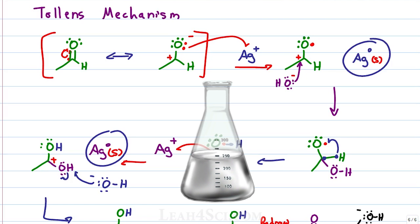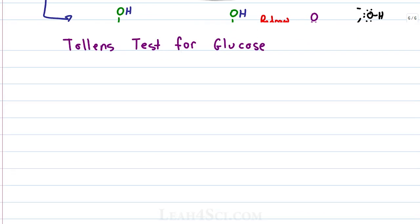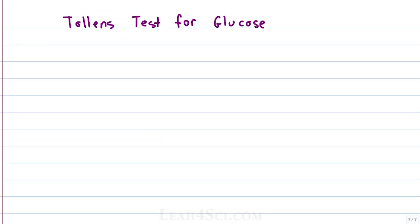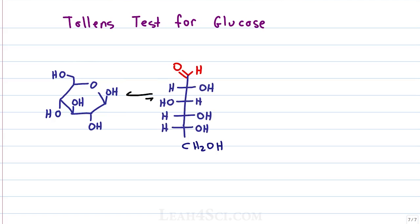You'll see this reaction again in biochem when you're doing a test for sugars that have an aldehyde group, for example glucose. Cyclic glucose despite being stable as is exists in equilibrium with a linear form and notice the linear form has an aldehyde.